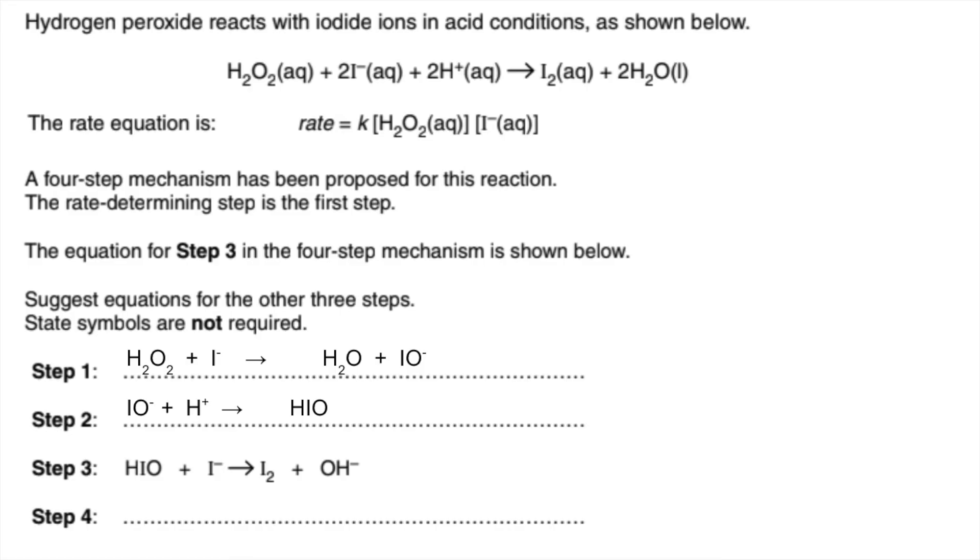We need to get rid of that OH- ion that's a product in step three, so we'll make one of those a reactant of step four and we're missing a water. We've only got one water so far as products so the final step is that. And obviously the final thing you would do is just add all the steps together and check you get the overall equation which you do.